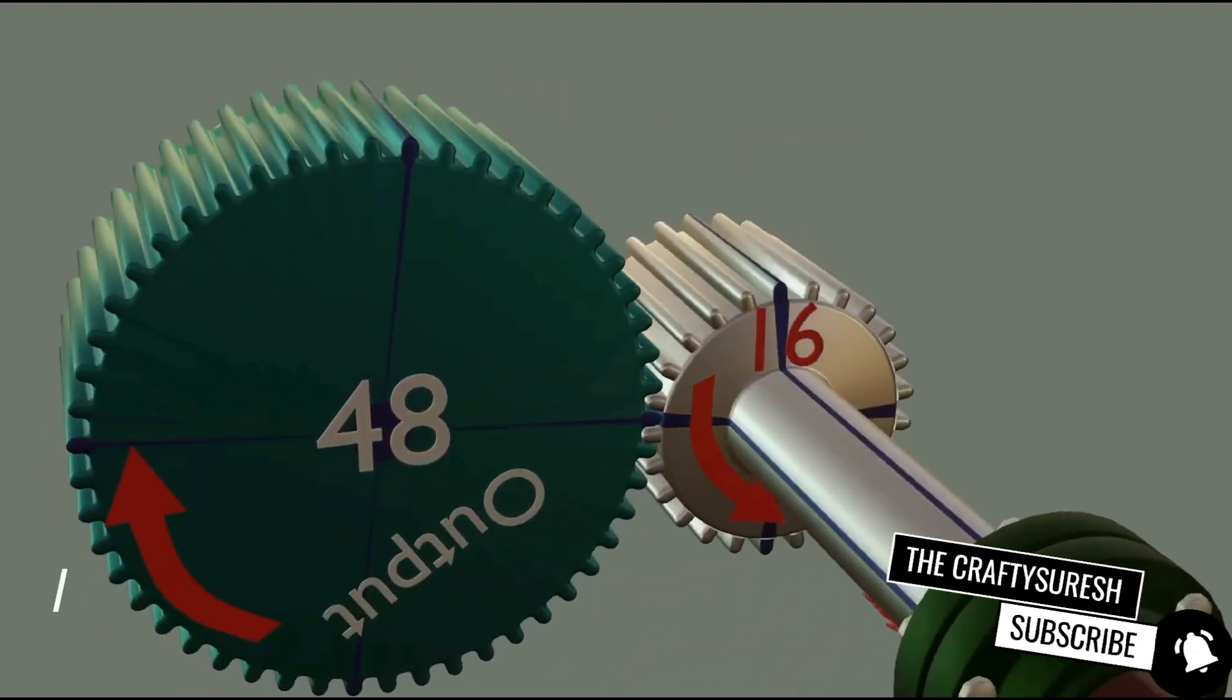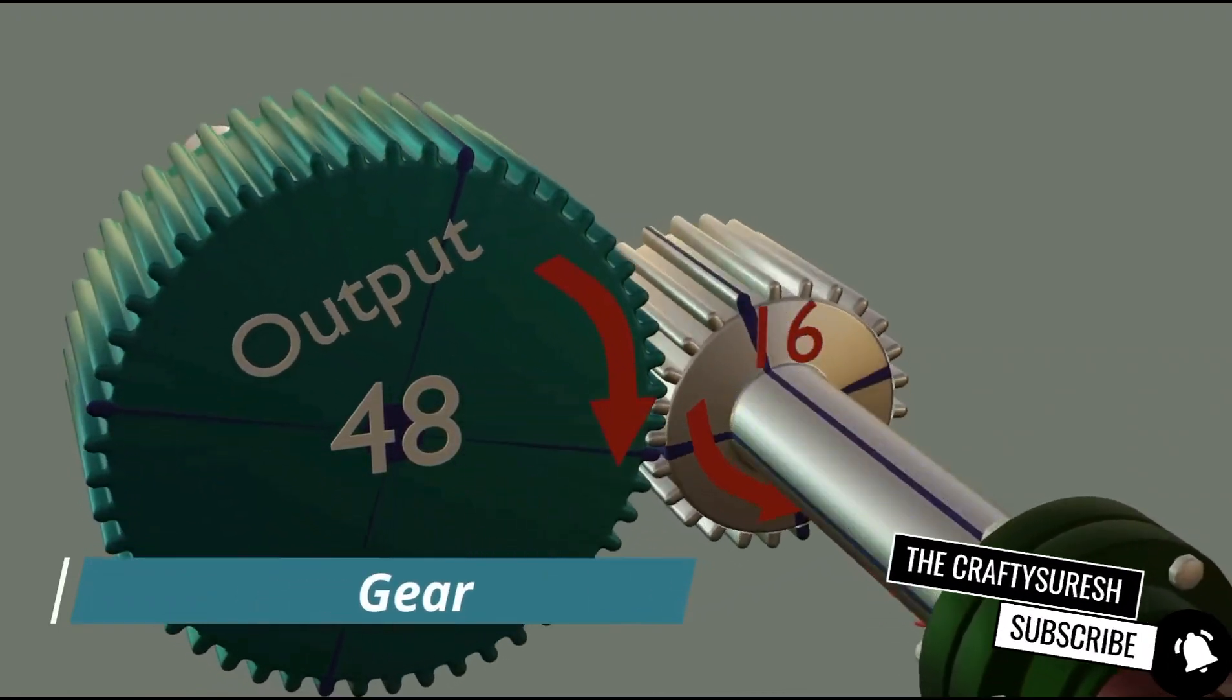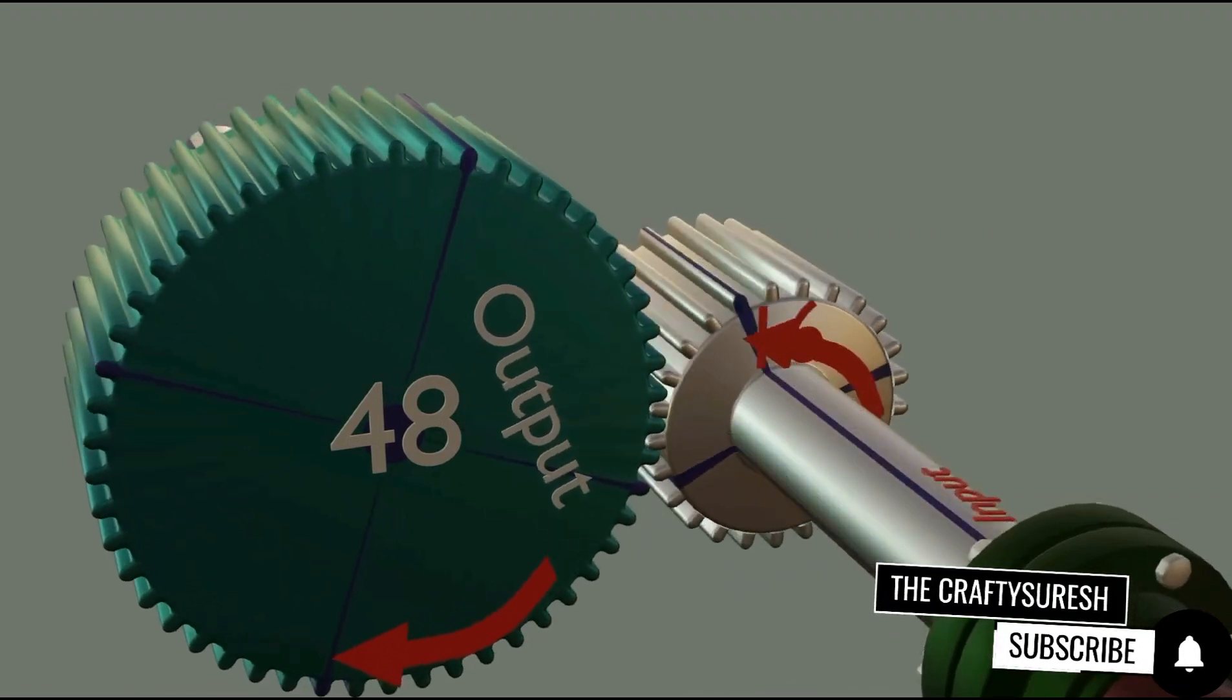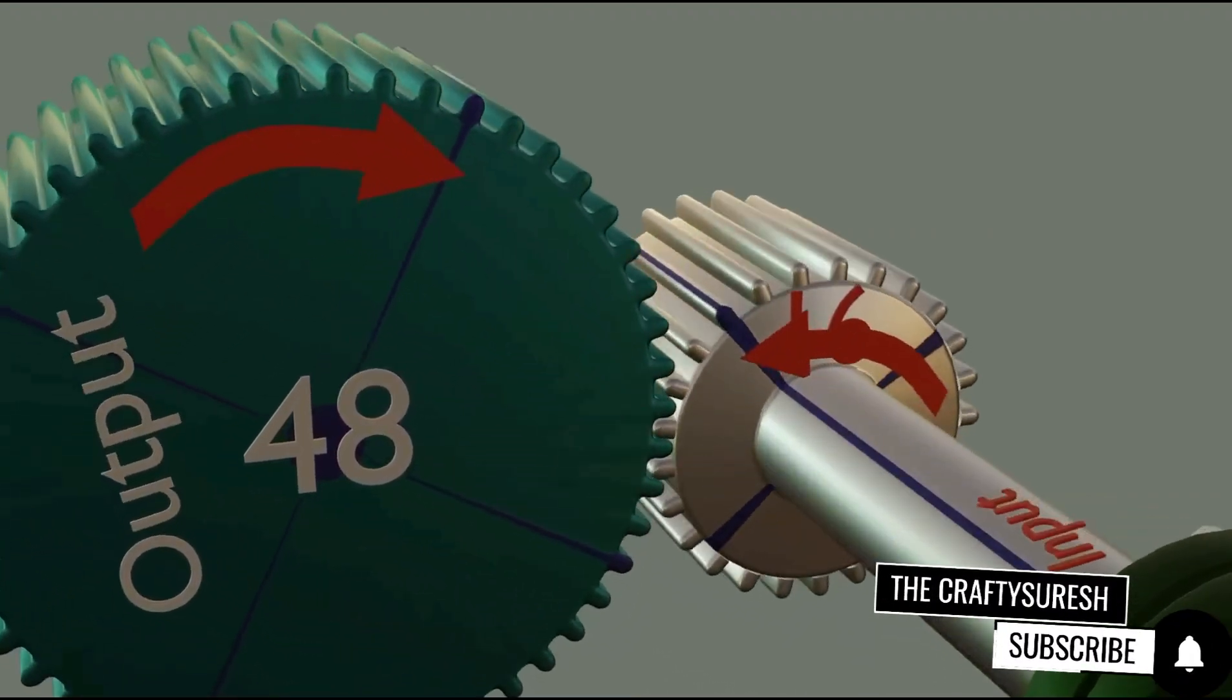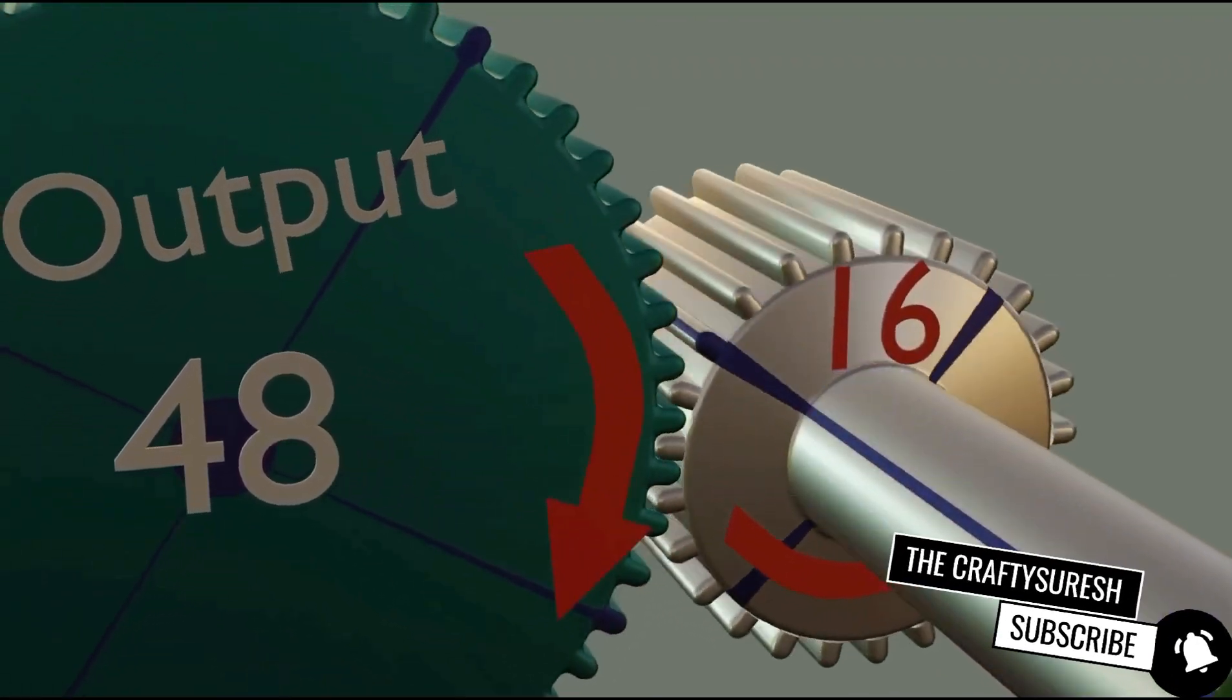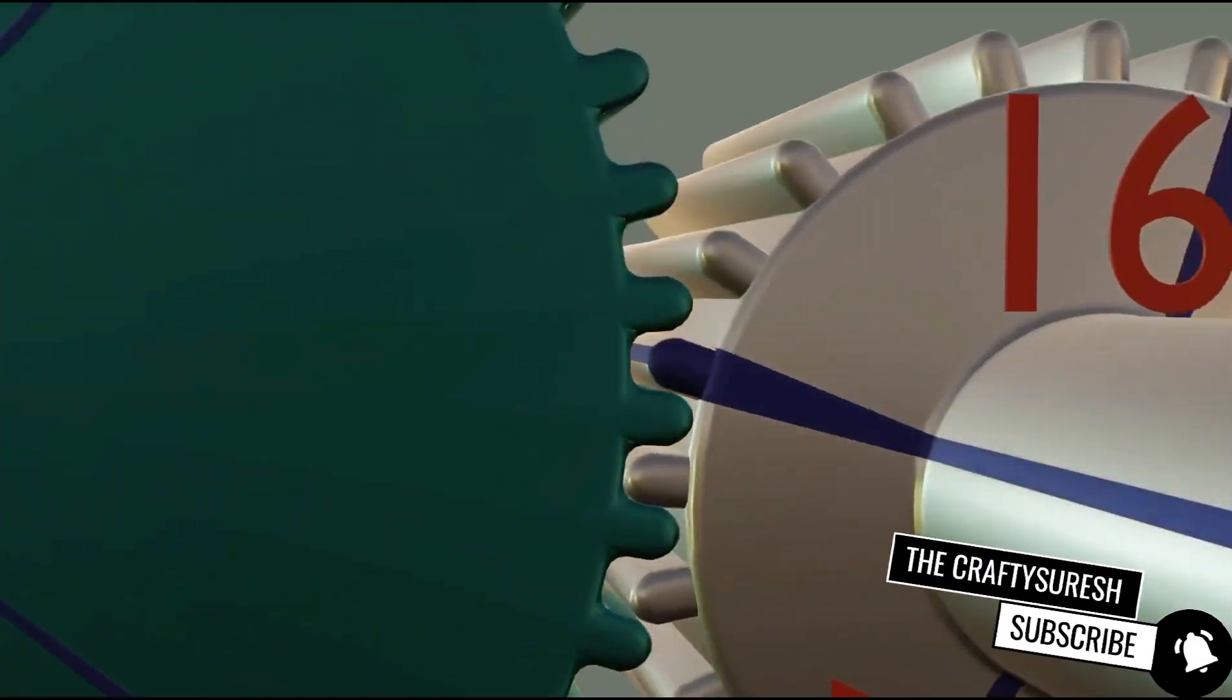The gear you are seeing is called a spur gear. It is not used for high speed application because it produces a lot of noise at high speed. When the gear teeth come in contact with the other gear teeth, the whole gear teeth comes in contact with each other, which causes noise. You will understand this better later.